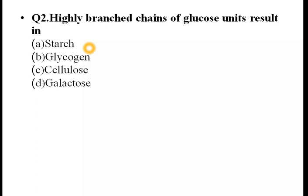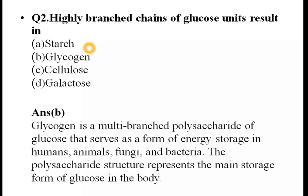Next question: Highly branched chains of glucose. We consume glucose in order to produce energy. If glucose is highly branched, what is the name of this structure? The answer is glycogen. Glycogen is a multi-branched glucose structure.